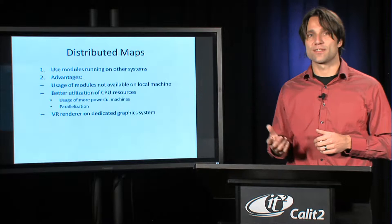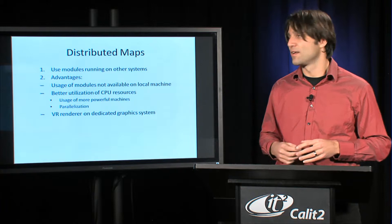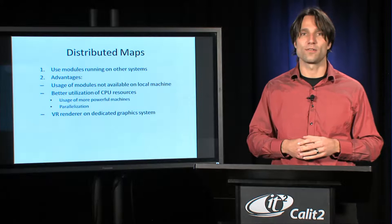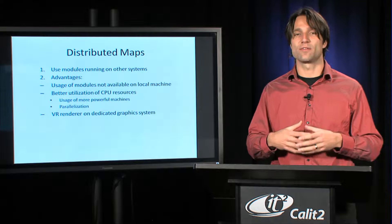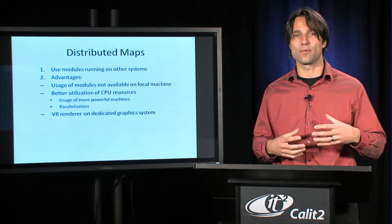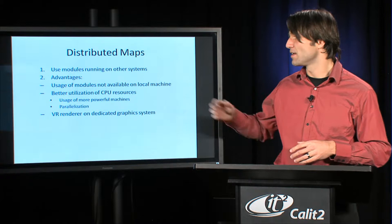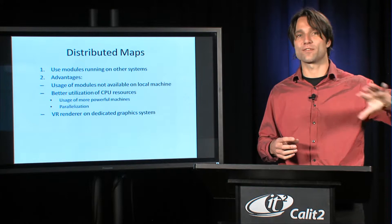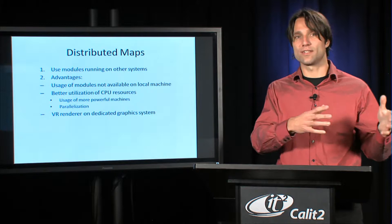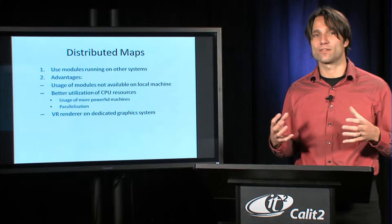Distributed maps is the first topic where we can run some of the modules of a map on a different system. The advantages are that we can use modules that may not be available on the local system, either for licensing reasons or architectural reasons. It can also be used to utilize CPU resources more efficiently, using a more powerful machine somewhere else or a whole cluster, a whole supercomputer perhaps, to run a portion of the computational load.